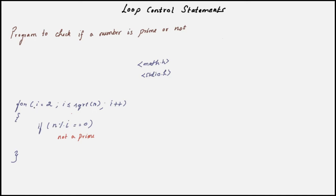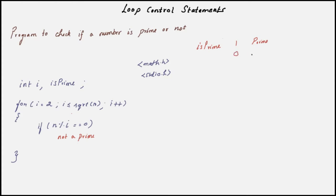Even for one value of i, if n mod i is 0, then the number is not a prime. So while running the loop, for certain values of i n mod i can be 0, and for others it might not be. Only after running the loop can you conclude whether it is prime or not. So you need a variable to remember what is happening inside the loop. Let's declare a variable called isPrime. We initialize isPrime to 1, assuming it is prime. Inside the loop, if n mod i is 0, it is not a prime, so we set isPrime to 0.